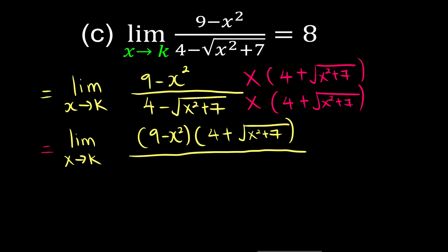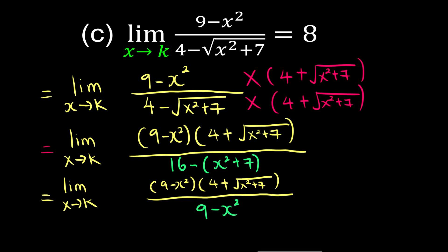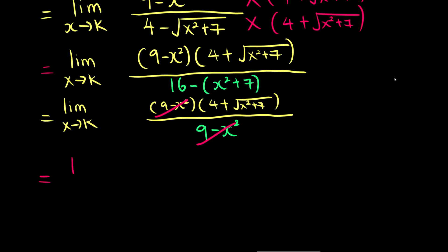On top we have (9 minus x squared) times (4 plus square root of x squared plus 7). At the bottom, using a² minus b²: 4 squared is 16 minus (x squared plus 7). Simplifying the denominator: 16 minus 7 gives 9 minus x squared. We can now cancel (9 minus x squared) from top and bottom, leaving just (4 plus square root of x squared plus 7).